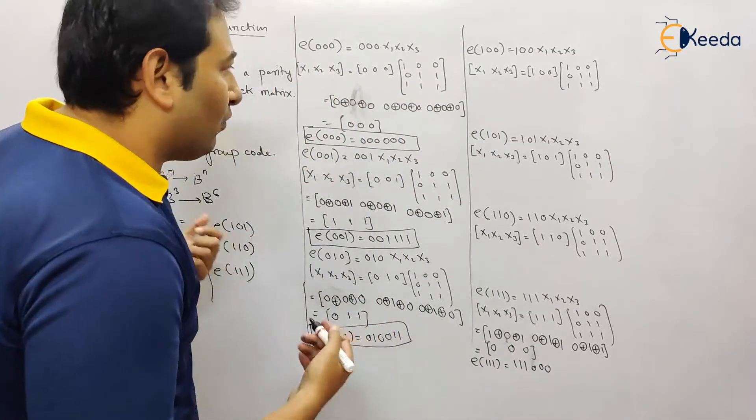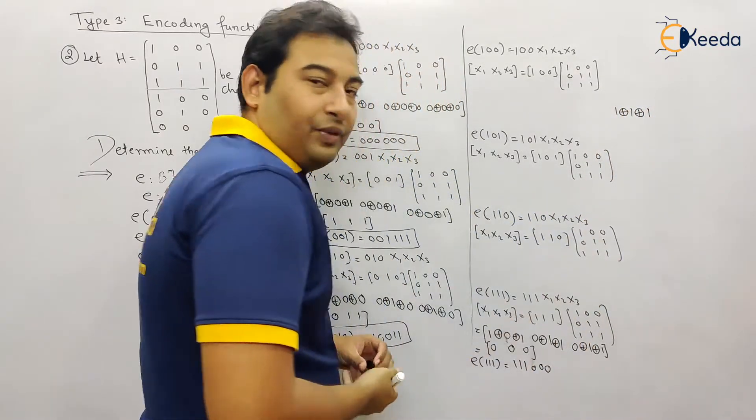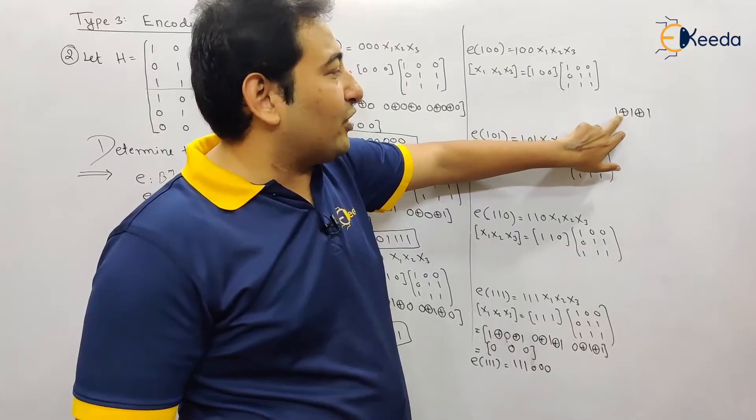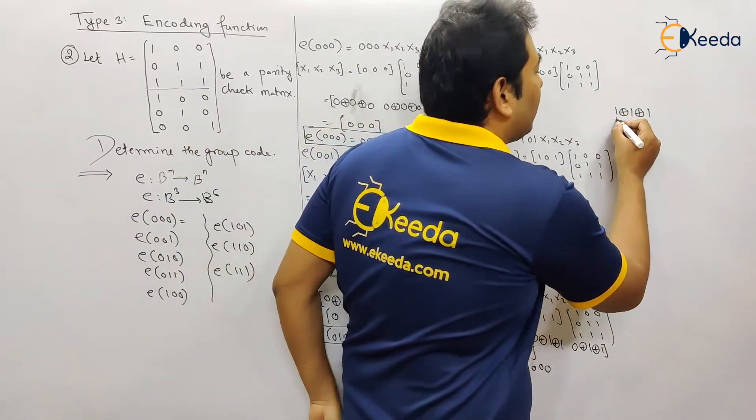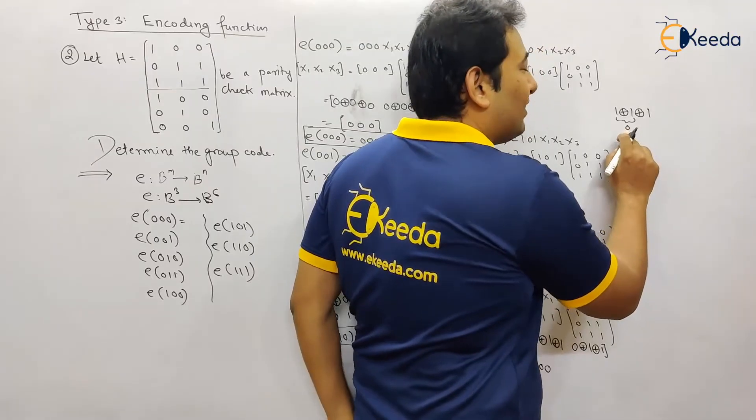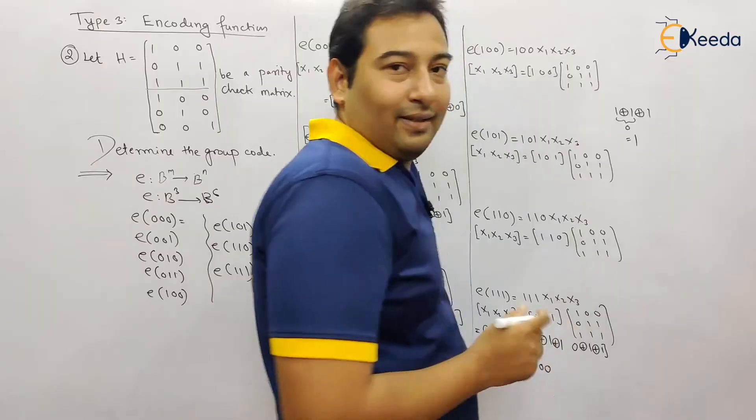Now suppose, what will be the answer if you get something like this? First of all, find 1 and 1 XOR, and 1 and 1 XOR is 0. That result, this XOR is 0. This result 0 will be XORed with 1, so the answer will be 1. Is this clear?